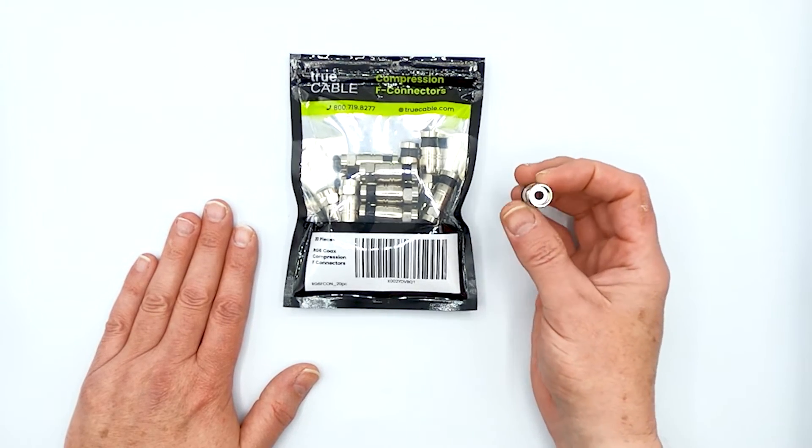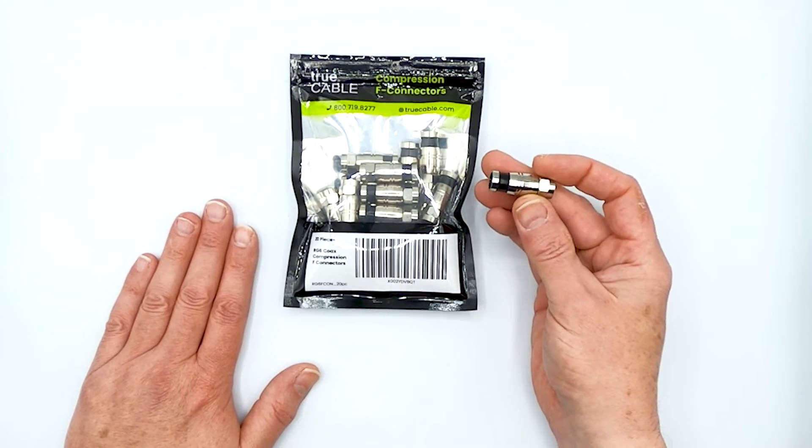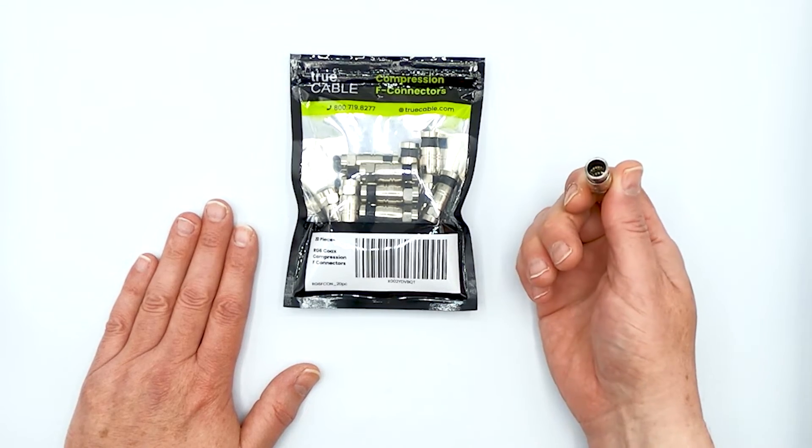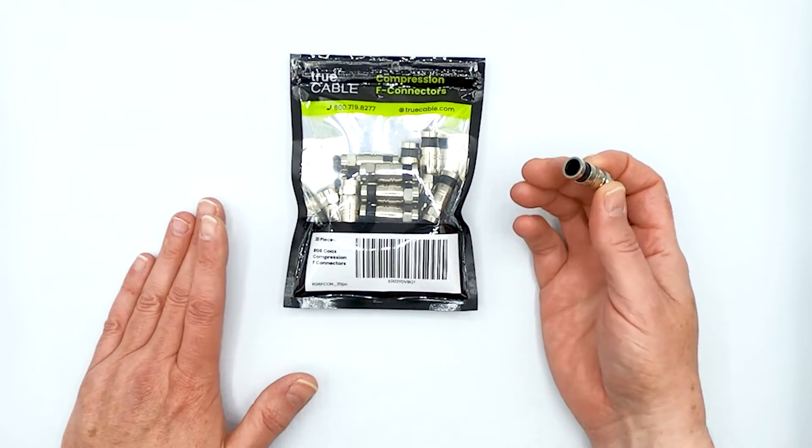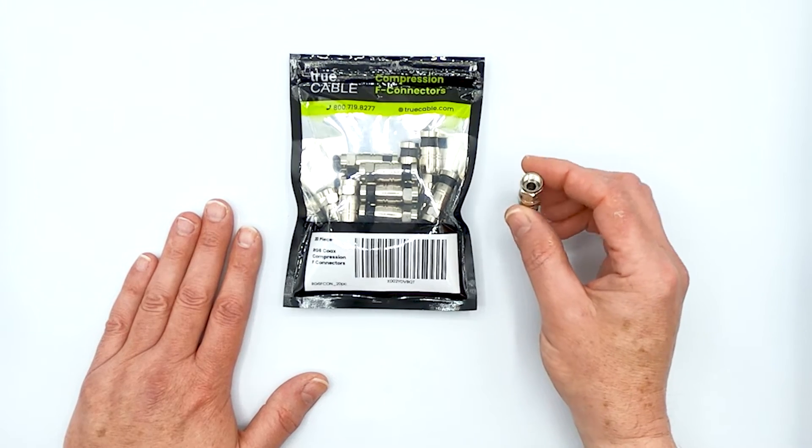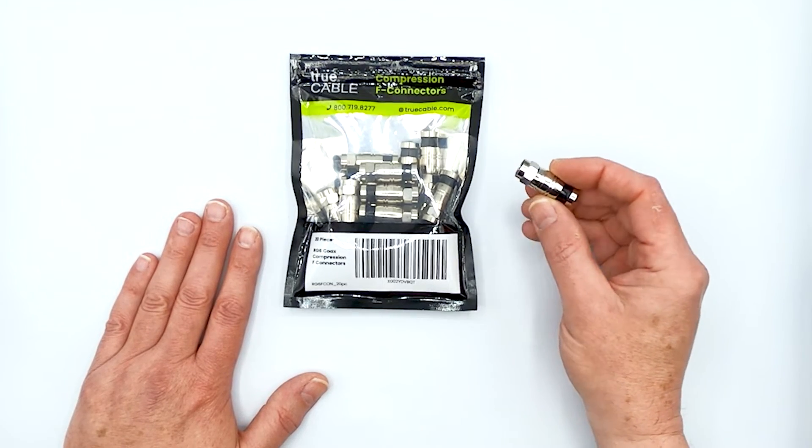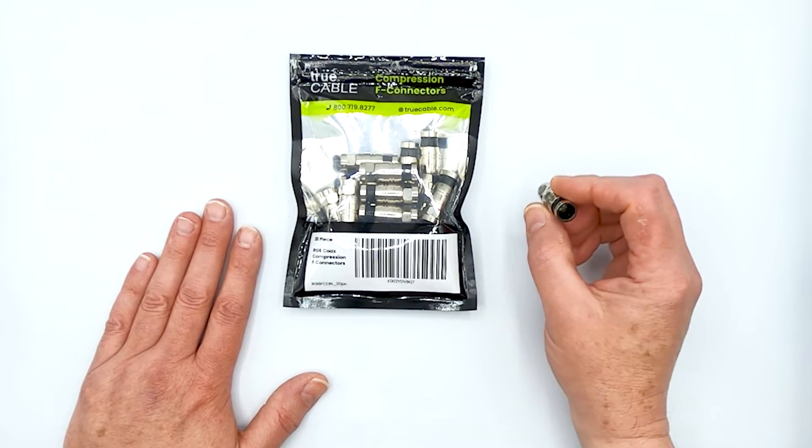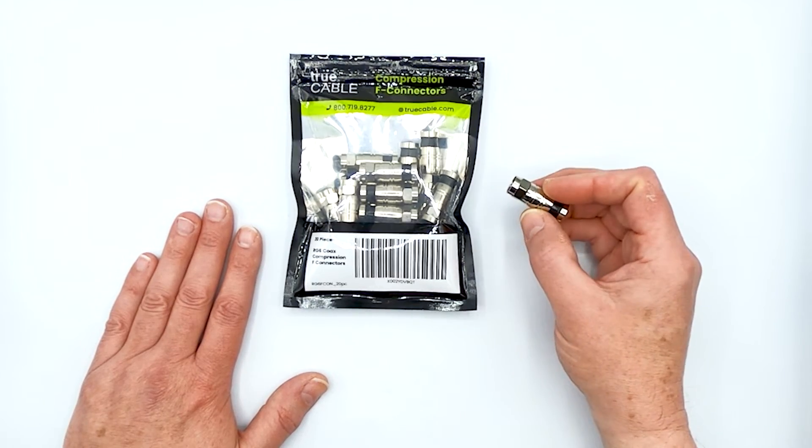And you're going to find that this is probably the easiest F connector you've ever worked with for coaxial cable, that being quad or dual shield. It works with tri-shield. It's a universal fit type connector. And it's going to save you a lot of time, hassle, and hand punctures.